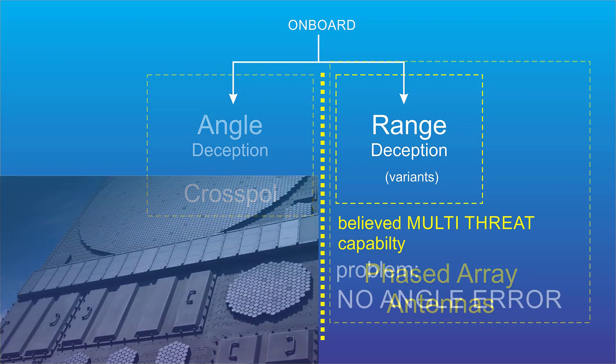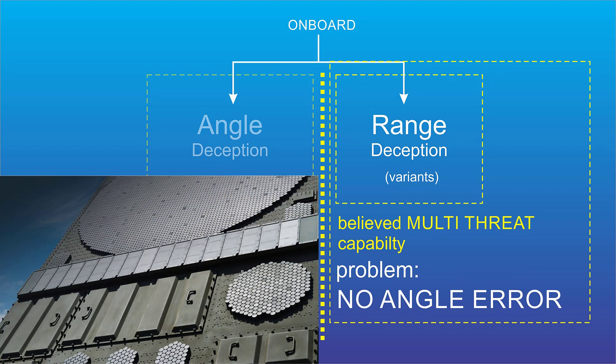But there's a big practical problem. A jammer that has a phased array antenna and range deception doesn't provide any angle error. So that jammer by itself can't make the missile miss the ship.